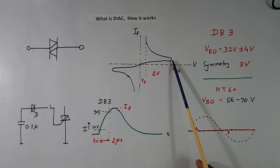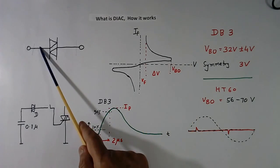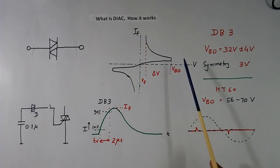This behaves both ways similar. This side also, if you apply positive here or negative here, both ways it will trigger if voltage across this exceeds VBO.